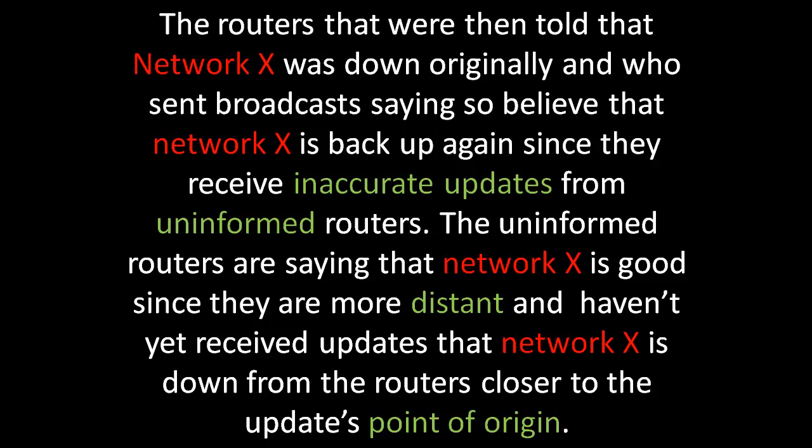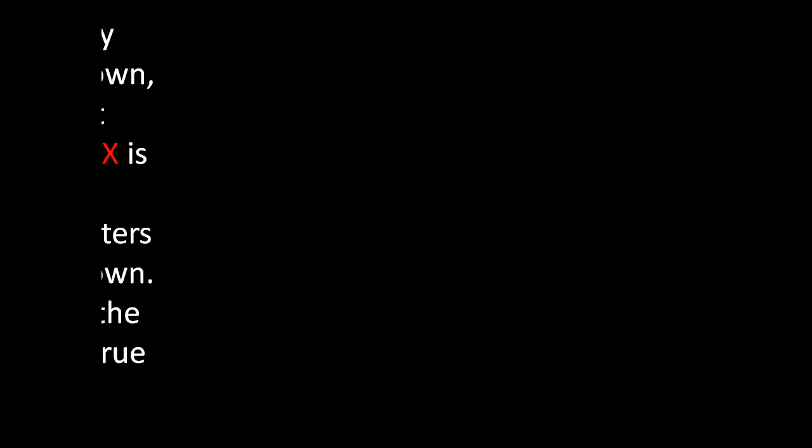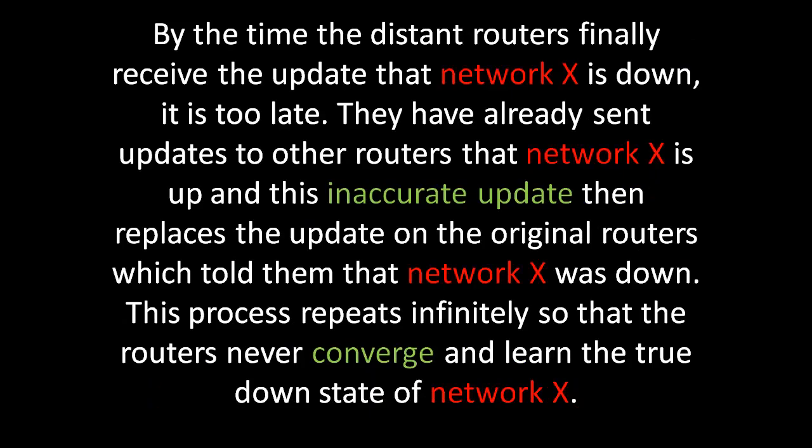The uninformed routers are saying that network X is good since they are more distant and haven't yet received updates that network X is down from the routers closer to the update's point of origin. By the time the distant routers finally receive the update that network X is down, it is too late. They have already sent updates to other routers that network X is up, and this inaccurate update replaces the update on the original routers which told them that network X was down. This process repeats infinitely so that the routers never converge along the true down state of network X.